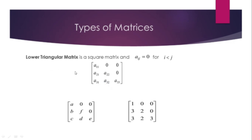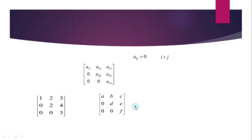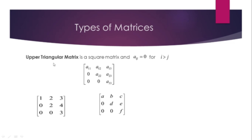Lower triangular matrix — a square matrix where A_ij equals 0 for i less than j. Upper triangular matrix — a square matrix where A_ij equals 0 for i greater than j.